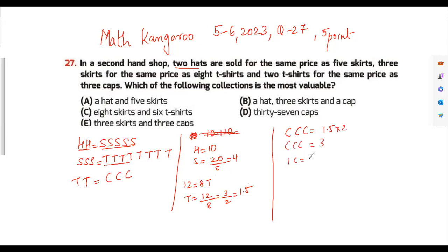Now we check. For option A, let me take a different color. One hat is 10, and one skirt is 4, so five skirts is 20. One hat and five skirts, so the value here is 30. Eight skirts, so eight skirts, eight into four is 32.